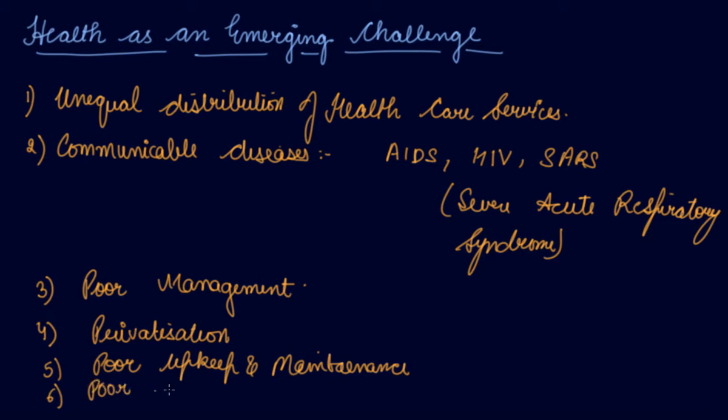Sixth: Poor sanitation level. Sanitation levels are extremely poor in both rural and urban areas in India. Poor sanitation causes health diseases, and these diseases are growing, hampering health as a social infrastructure of the country.